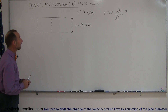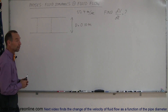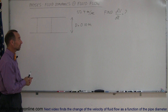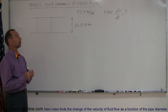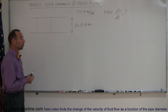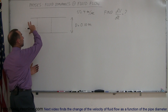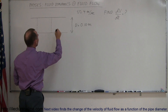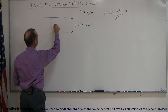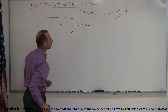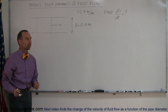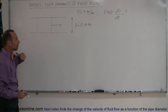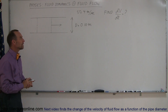Welcome to our lecture online. Today we're going to talk about physics — in particular, fluid dynamics. Starting out, we're talking about fluid flow. We have a pipe with fluid flowing in this direction with a velocity equal to 4 meters per second, and the diameter of the pipe is 0.1 meters.